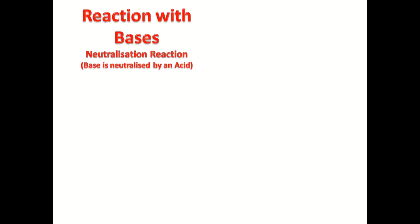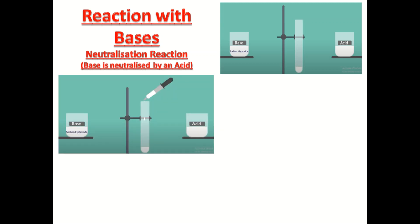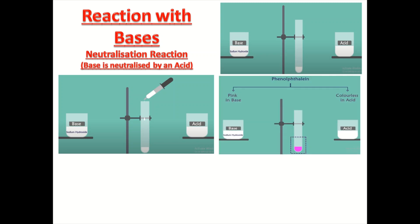I have told you about the reaction of acids with metals and reaction of acids with carbonates. Now we will study the reaction of acids with bases — this is also called neutralization reaction. With the help of a test, we can prove that base is neutralized by an acid. Here, in this test tube, we will pour base, that is sodium hydroxide. Now, when we add phenolphthalein, that is an acid-base indicator, its color changes to dark pink. Phenolphthalein turns base into pink color and acid into colorless.